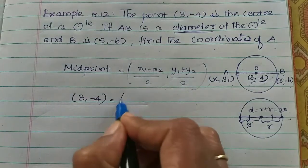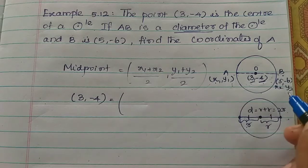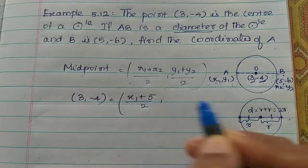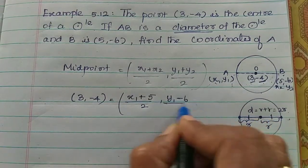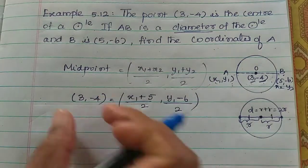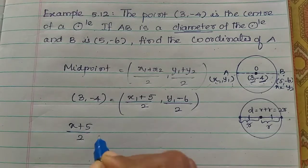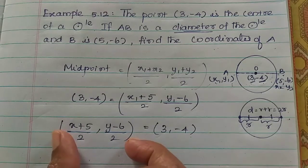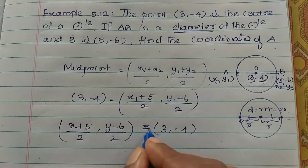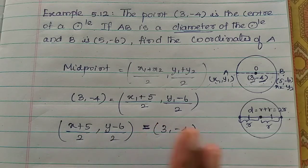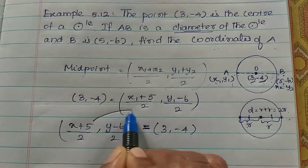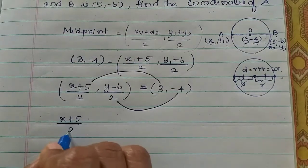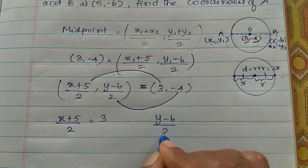Let A be (x1, y1) and B be (x2, y2), which is (5, -6). We substitute into the midpoint formula. So x1 plus 5 divided by 2, and y1 minus 6 divided by 2, equals the center (3, -4). We equate x-coordinates with x-coordinates and y-coordinates with y-coordinates: x plus 5 divided by 2 equals 3, and y minus 6 divided by 2 equals minus 4.